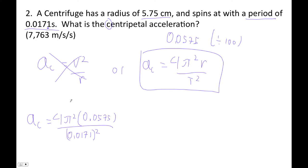So 4 pi squared times 0.0575 divided by 0.0171, and then don't forget to square the 0.0171. And when I do that, I get 7763.103219 meters per second squared.